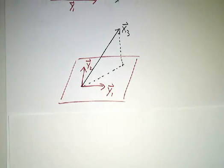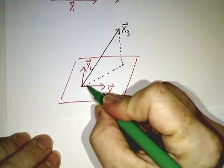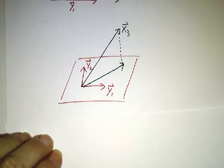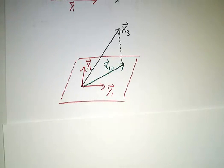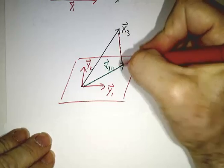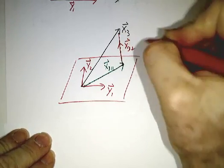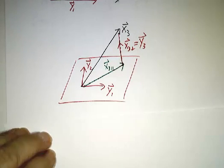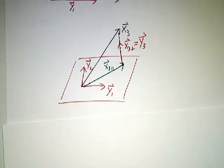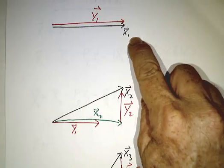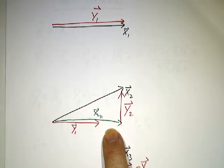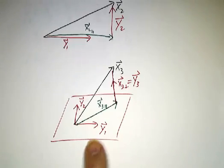When we go to the third stage, we've got y1 and y2, and they span a plane, and we're given a vector x3, and we again break x3 up into two pieces. We've got a piece that's parallel to stuff that we've had before, so call it x3 parallel, and that's what we want to get rid of, and it's got a piece that's perpendicular to what we have before, and that's what we want to keep and call y3.